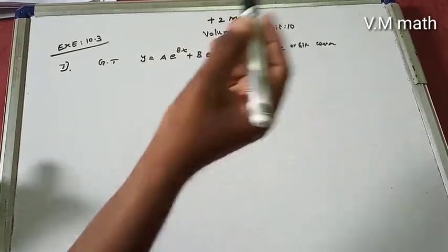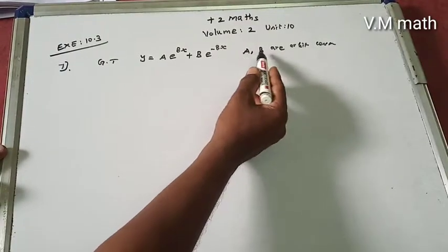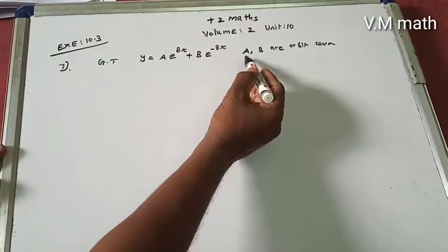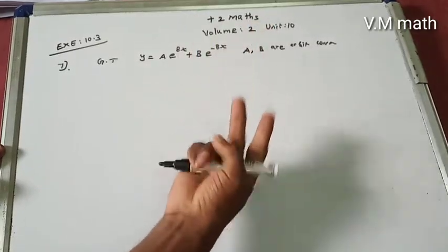With arbitrary constraints, we will eliminate them to form a differential equation. For two arbitrary constraints, we differentiate twice.